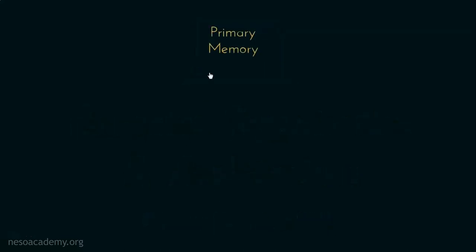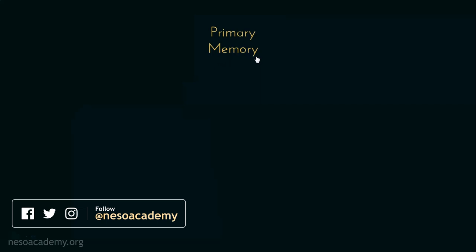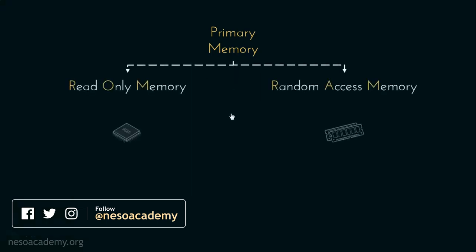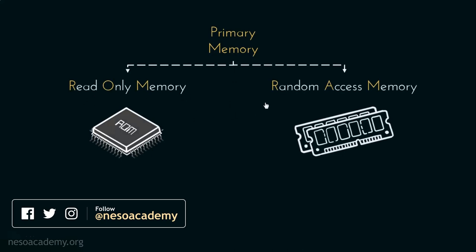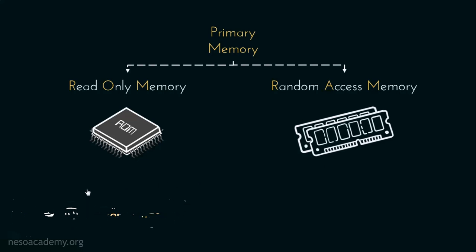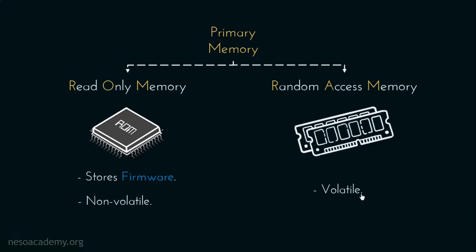During the session Introduction to Primary Memory, we learned that primary memory is actually of two types: the Read-Only Memory or ROM, and the Random Access Memory or RAM. We also learned that ROM stores firmwares and is non-volatile, meaning even if we turn the power off, the data stored within remains intact. Whereas RAM is volatile — whatever is stored in RAM gets flushed once the power is turned off. Since we have been studying about ROM in the last few sessions, today we will mainly focus on RAM.